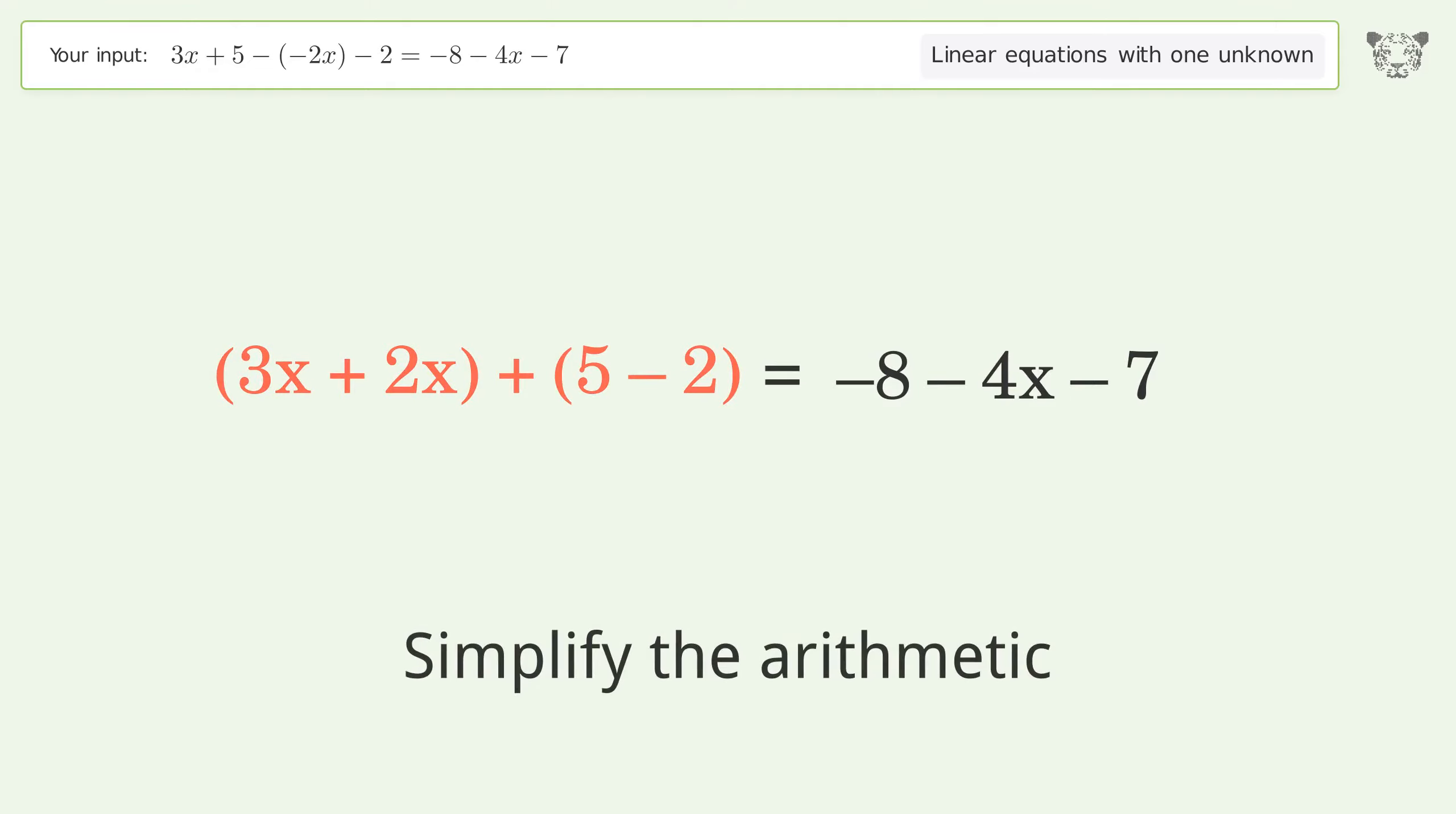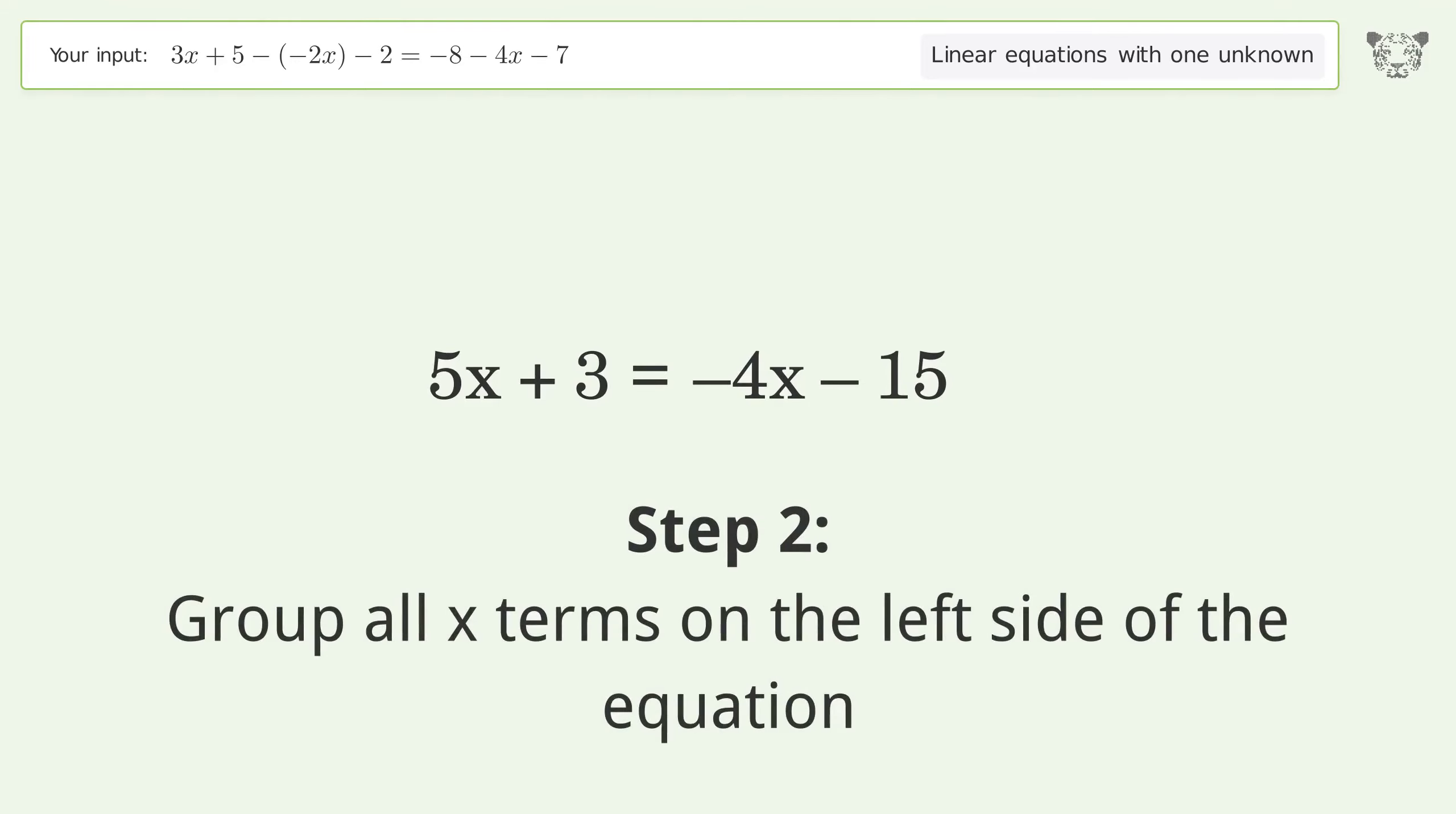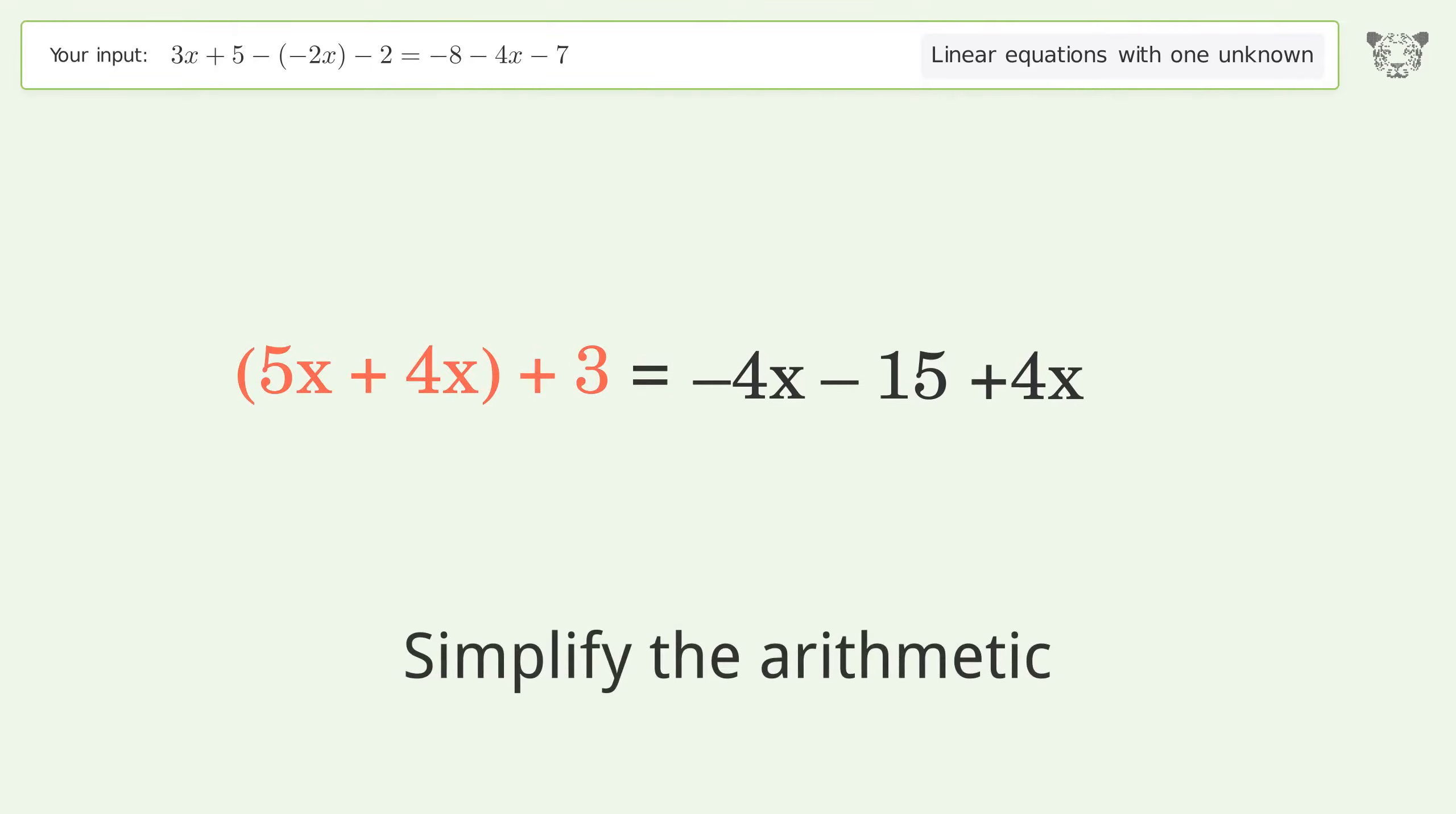Simplify the arithmetic. Group like terms. Simplify the arithmetic. Group all x terms on the left side of the equation. Add 4x to both sides. Group like terms and simplify the arithmetic.